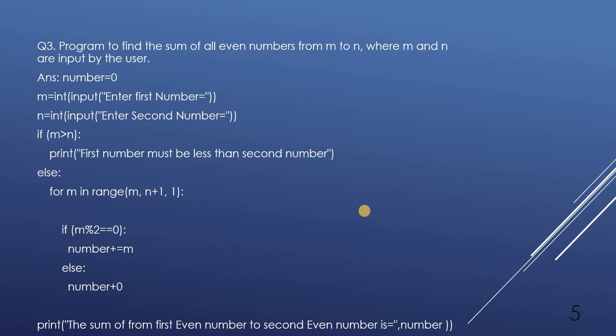Question number 3: program to find the sum of all even numbers from M to N, where M and N are input by the user. Same structure as before, but we only sum even numbers. First we declare variable 'number = 0', then we take input M (enter first number) and N (enter second number).